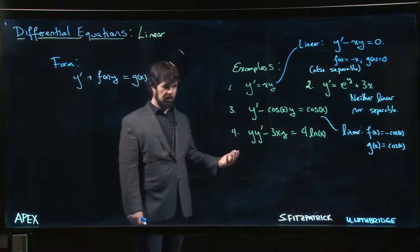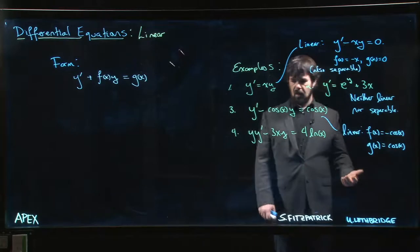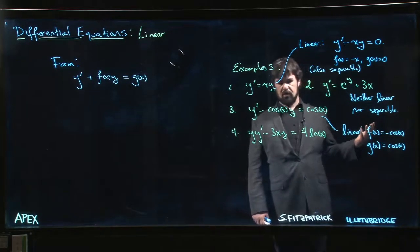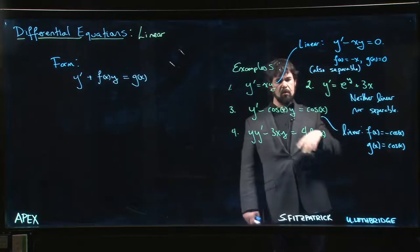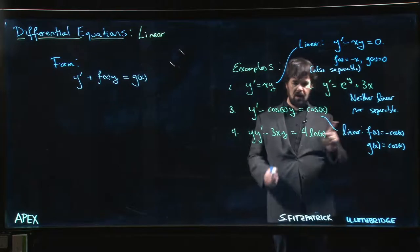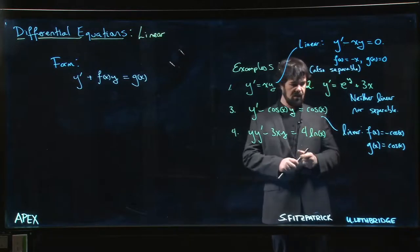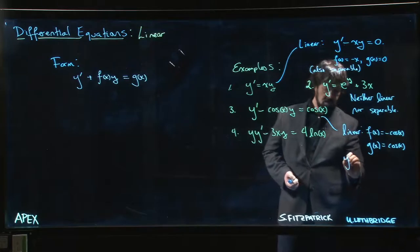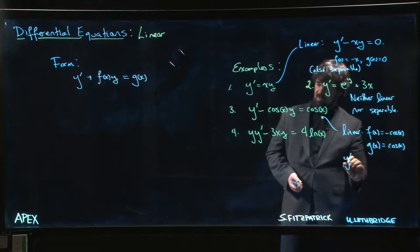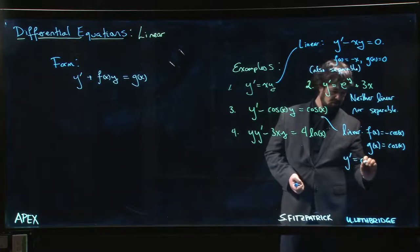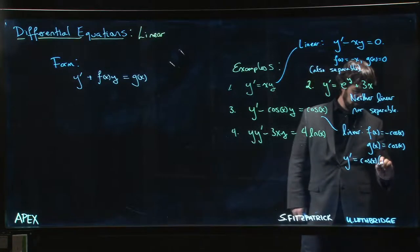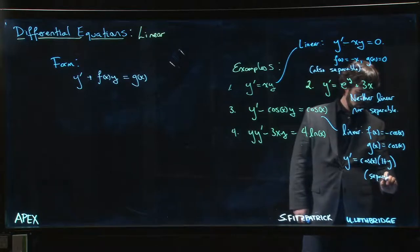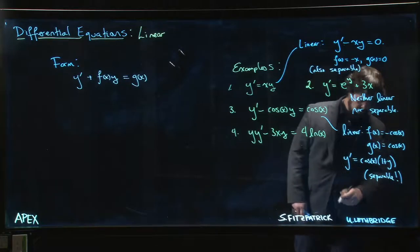What about is it separable? We might as well ask ourselves that too. Can we separate this? Because it's cosine, we can write this as y prime is equal to cos x times 1 plus cos x times y. Factor out that cos x: 1 plus y. So it's also separable.